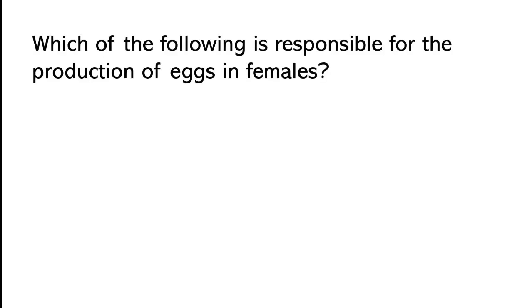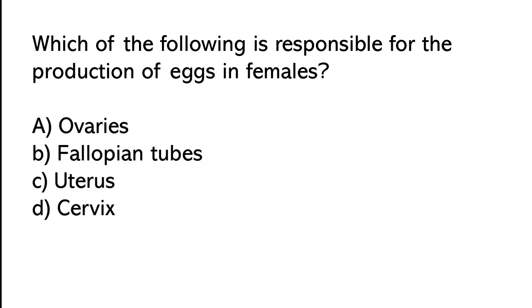Which of the following is responsible for the production of eggs in females? Ovaries, Fallopian tubes, Uterus, Cervix. So the correct answer is option A: ovaries.